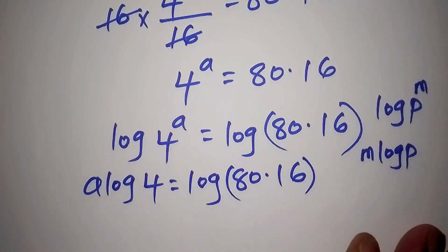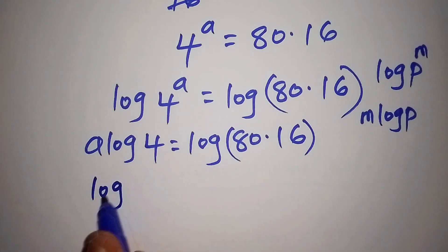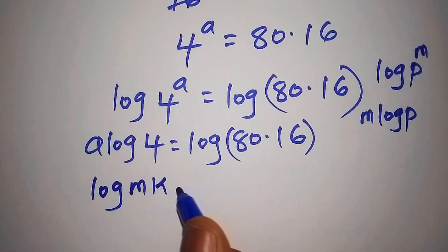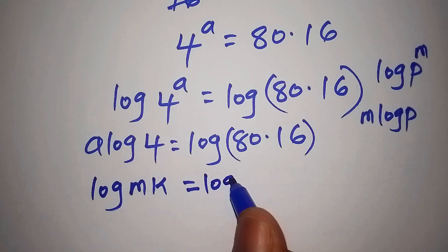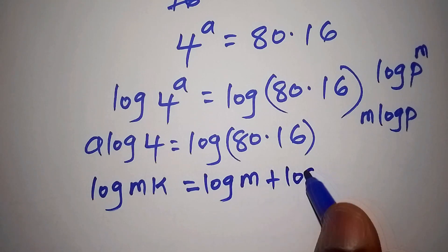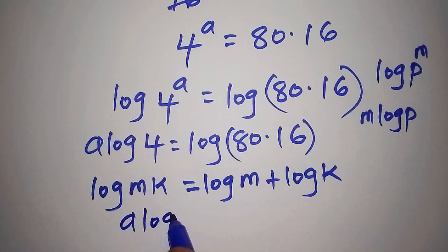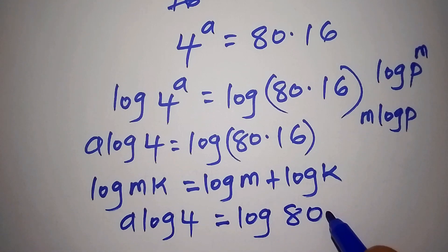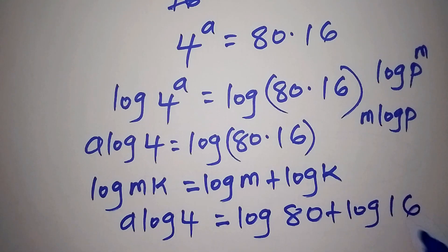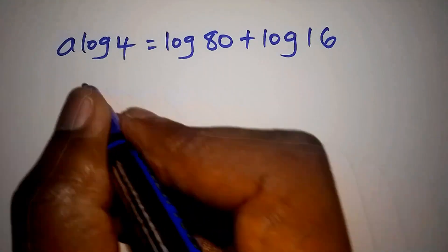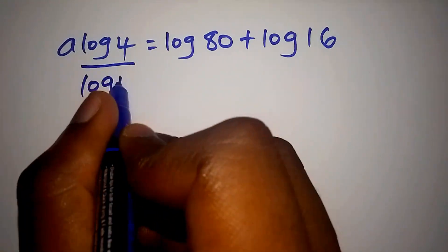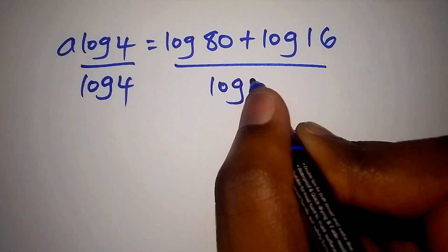When we have the log of m multiplied by k, it can be written as the log of m plus the log of k — that's according to the law of logarithms. So a times the log of 4 equals the log of 80 plus the log of 16. Next, we divide both sides by the log of 4 so that we remain with a.